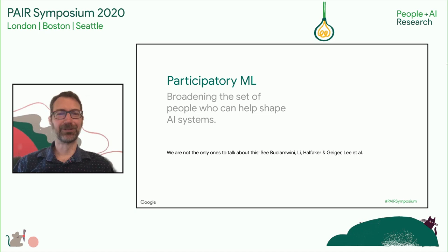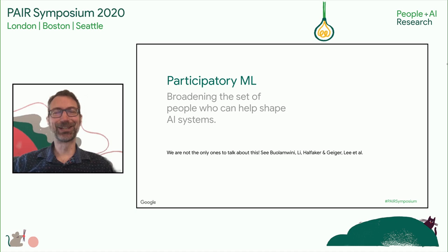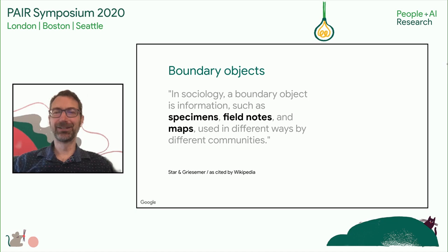Luckily, we don't have to start from scratch in thinking about how to make these collaborations happen. Sociologists have been on the case for a long time, looking at how these multidisciplinary collaborations work. One of the key things is something called a boundary object. The idea is that a boundary object is essentially a bridge between disciplines — an object that sits between different communities, something concrete like a specimen or a field note, used in different ways by different communities as a way for them to collaborate.